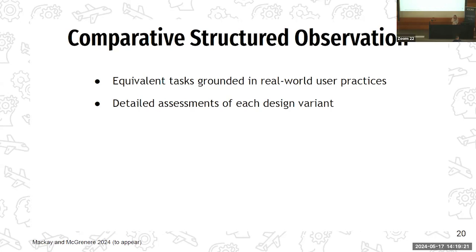The Comparative Tutorial Observation involves first constructing tasks grounded in real-world user practice. Participants are then asked to perform those tasks with different design variants and compare them to each other. This results in a detailed assessment of the advantages and disadvantages of each design variant in terms of situation awareness. While the focus is on qualitative measurements, Comparative Tutorial Observation can also gather performance data, allowing researchers to further the design of future safety-critical systems based on diverse measures of situation awareness — both qualitative and quantitative.